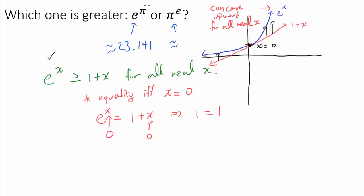And you may say, how do we transform this into e to the pi and pi to the e? Obviously, if we just plug in pi, we get e to the pi is greater than or equal to 1 plus pi. That's not what we want to compare. Well, we are not going to plug in pi. But we are going to plug in x is equal to pi over e minus 1. And we are going to be done.